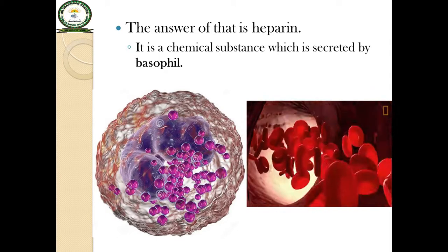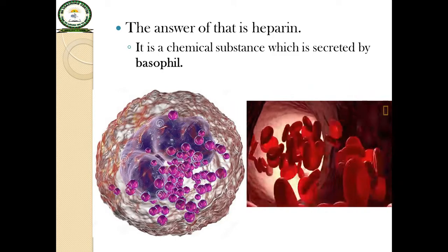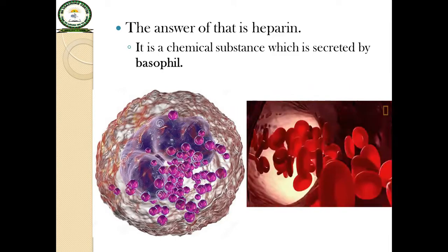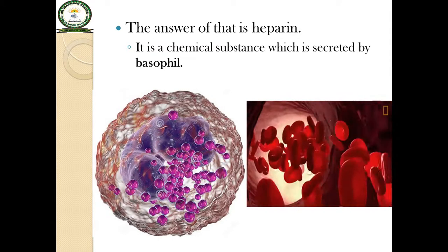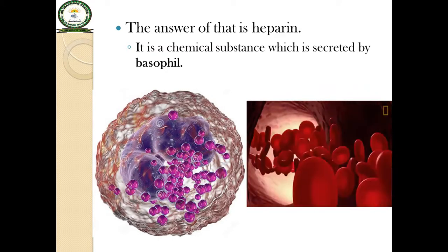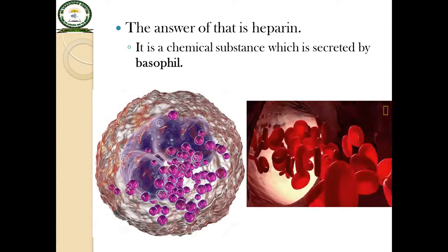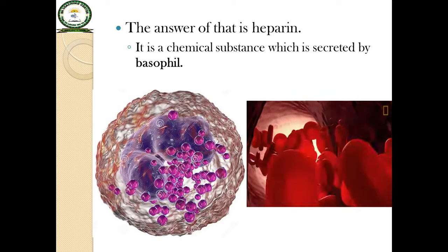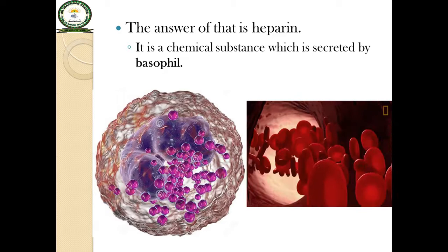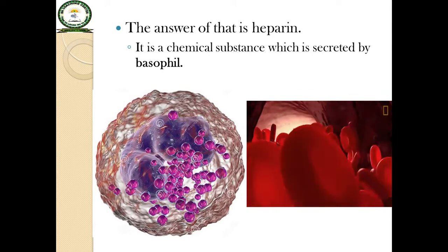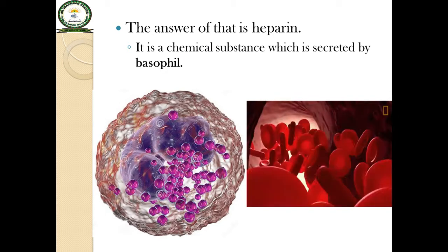As you know, the basophil is a type of white blood cell (WBC), and WBCs are present in our blood which produce antibodies. The basophil is the WBC which secretes heparin, and heparin is a very potent anti-coagulant which prevents the blood from clotting.